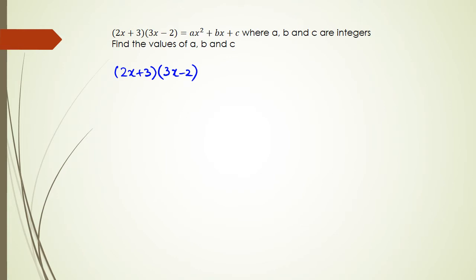So this is what we do. 2x times 3x first, which equals to 6x squared, and then 2x times negative 2, which is negative 4x. 3 times 3x, which is 9x, and 3 times negative 2, which equals to negative 6. So simplifying this, we have 6x squared plus 5x minus 6.